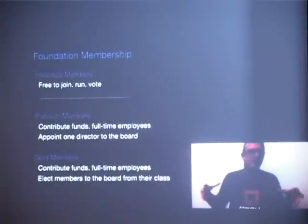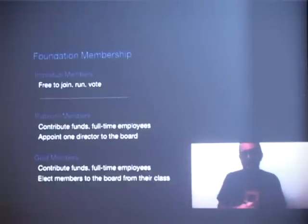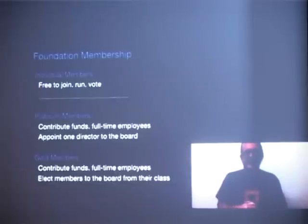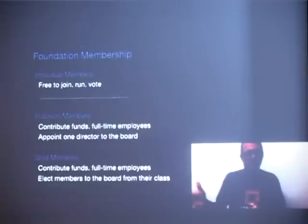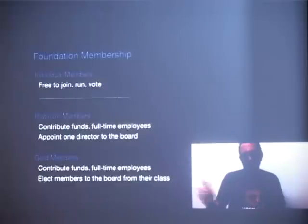Platinum and gold members are organizations providing the bulk of funding and support. Platinum members, in addition to substantial funding, are required to have full-time employees dedicated to working on OpenStack — developers, community leadership, or other roles advancing OpenStack. Platinum members each appoint a director to the board. Gold members elect members to the board amongst a larger group. There are eight seats elected by individual members, eight appointed by platinum members, and eight elected by gold members.